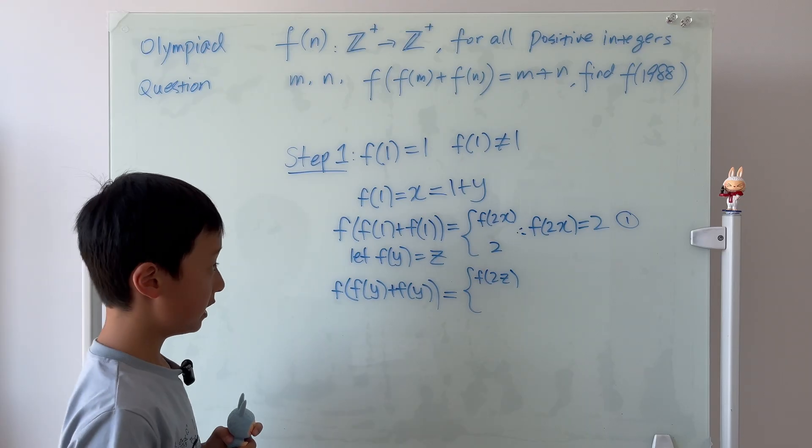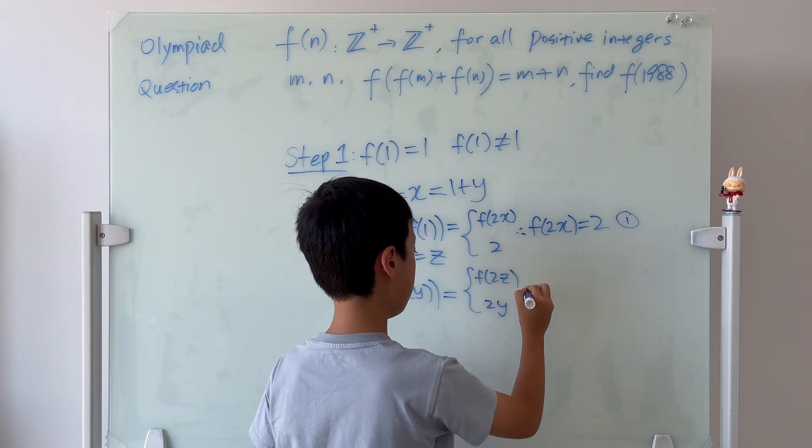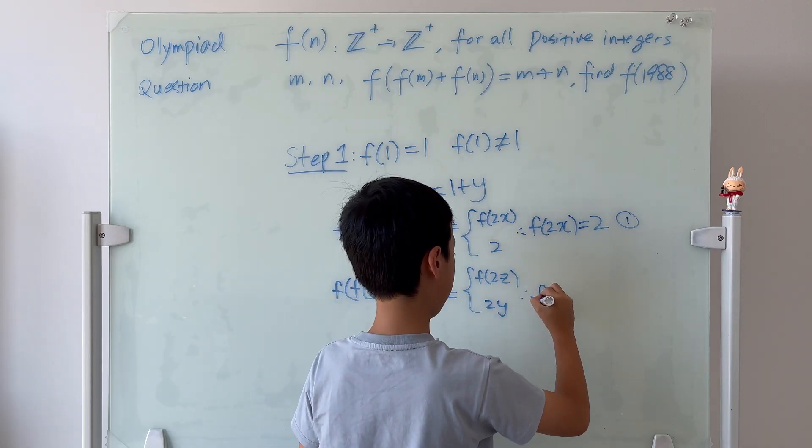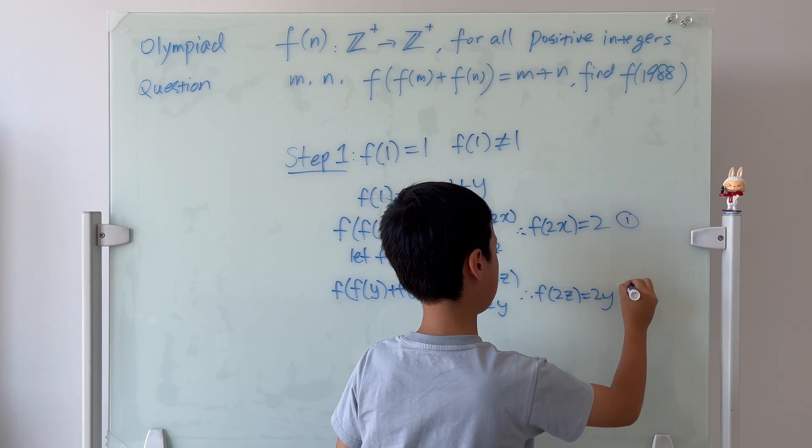We can also use the definition, it's 2y. So, therefore, f of 2z is equal to 2y. Equation 2.